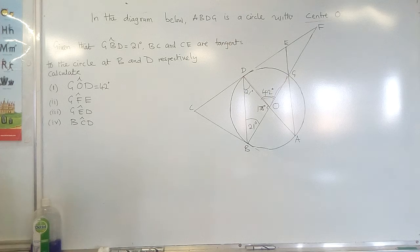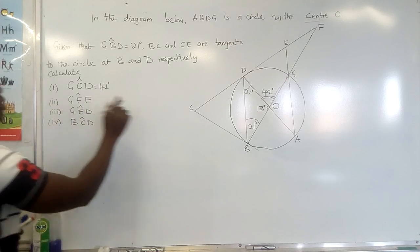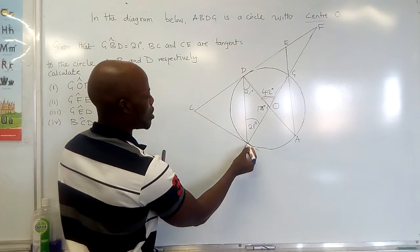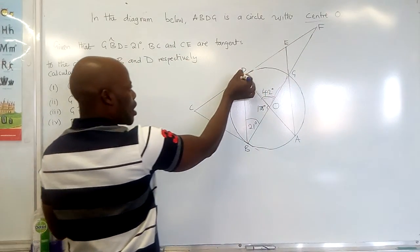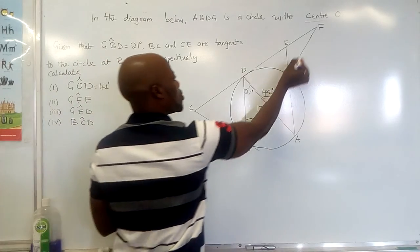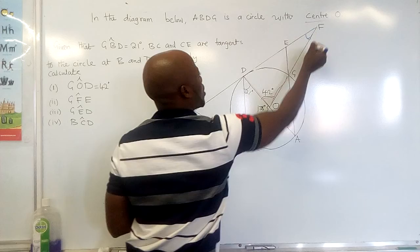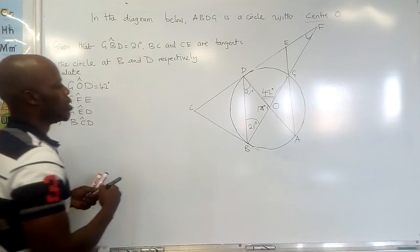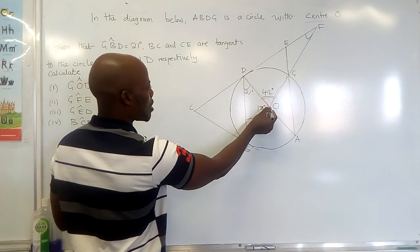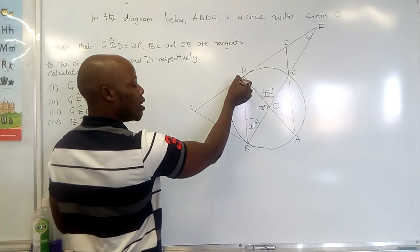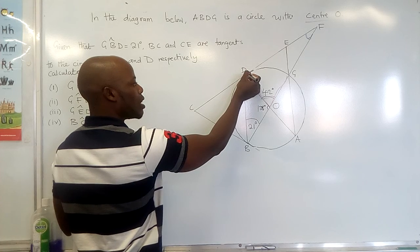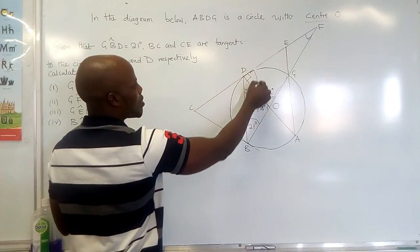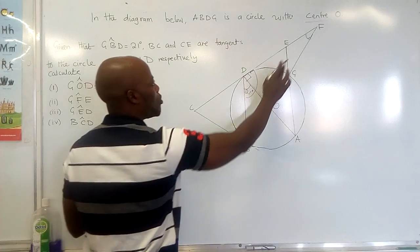The next question wants us to find angle GFE. We can see this triangle which passes up to F and then comes up to D and down to P. We use this triangle to find this angle. We know this is 21 degrees, and where the radius touches the tangent line we have 90 degrees. So this is 90 degrees.